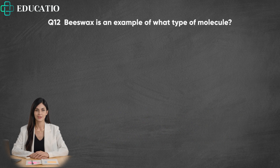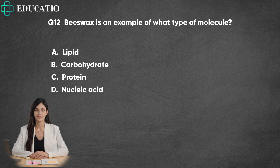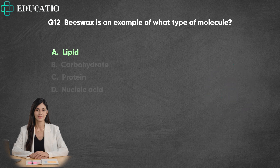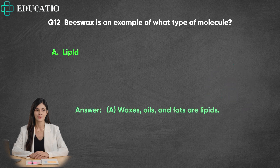Question 12. Beeswax is an example of what type of molecule? A. Lipid. B. Carbohydrate. C. Protein. D. Nucleic acid. Answer: A. Waxes, oils, and fats are lipids.